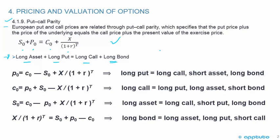Using simple algebra we can rearrange that formula. We can create a synthetic put by being long the call, short the asset, and long the bond. If it's a positive sign it's long; if it's a negative sign it's short.